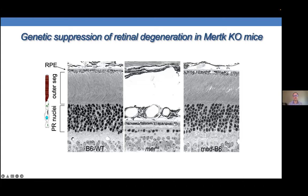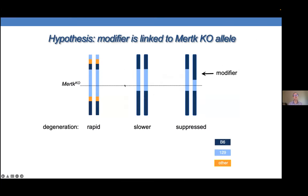We hypothesized that a minority of animals had a rare recombination that replaced some 129-strain 'fellow traveler' DNA with B6 DNA, and that B6 alleles of a gene or genes in this region were conferring the suppressive activity. We investigated that hypothesis by scoring with genetic markers around the MERTK knockout allele and indeed saw heterozygous regions, where animals showed a fascinating mosaic phenotype intermixing degenerating regions with normal regions.